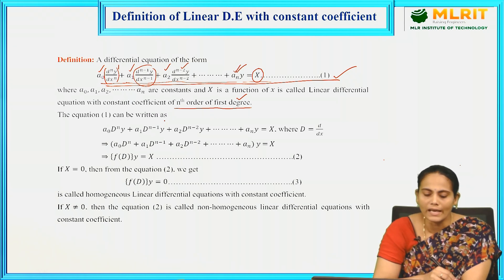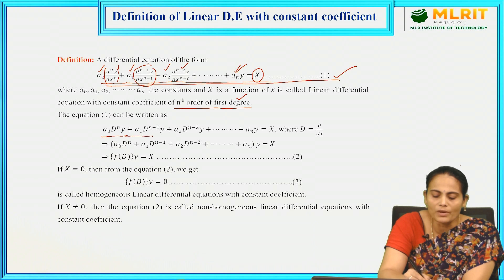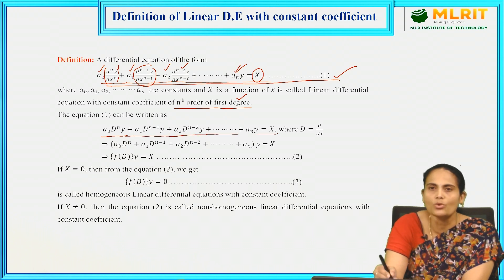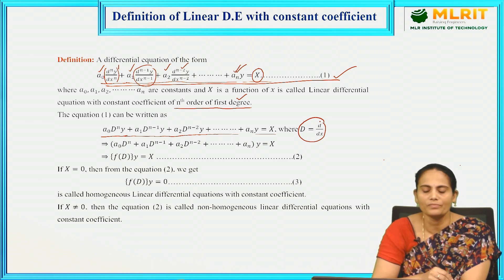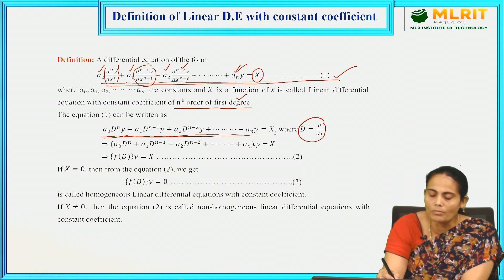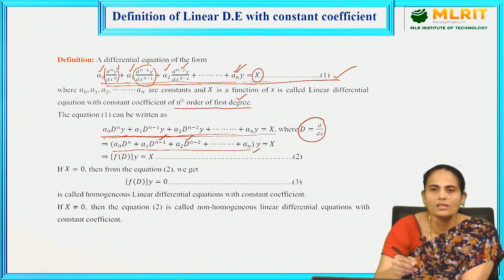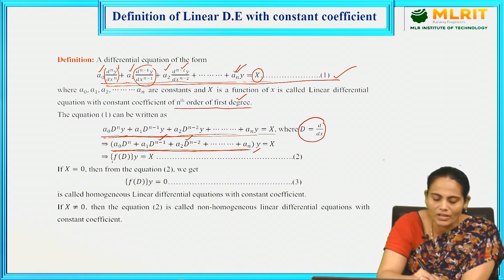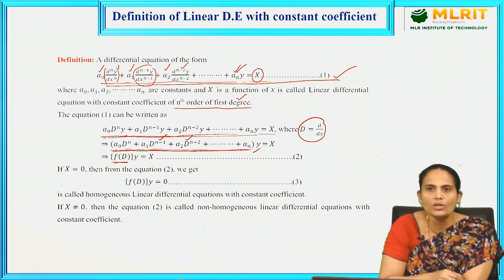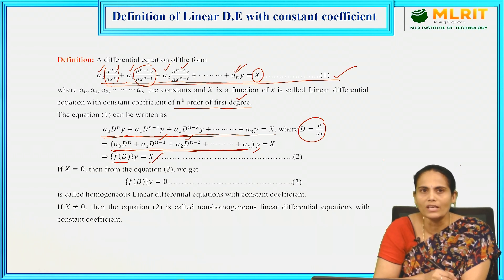Equation 1 can be written using the differential operator D (where D stands for d/dx) as: a₀Dⁿy + a₁Dⁿ⁻¹y + a₂Dⁿ⁻²y + ... + aₙy = X. Taking y as common, this becomes (a₀Dⁿ + a₁Dⁿ⁻¹ + a₂Dⁿ⁻² + ... + aₙ)y = X. The coefficient of y is a function of D, so we can write this compactly as f(D)·y = X.